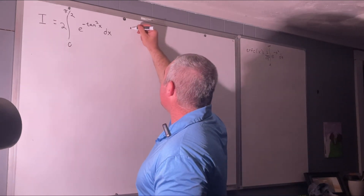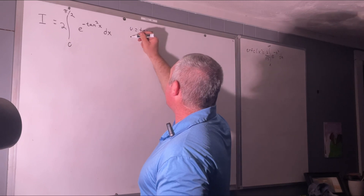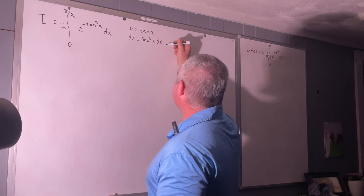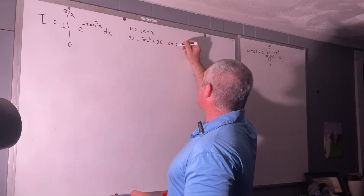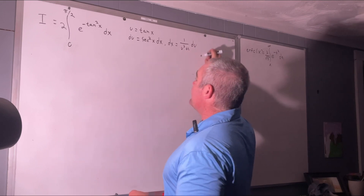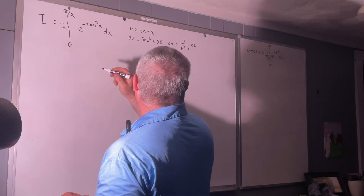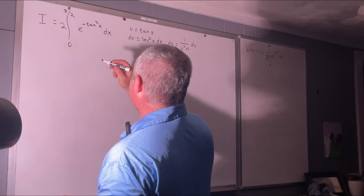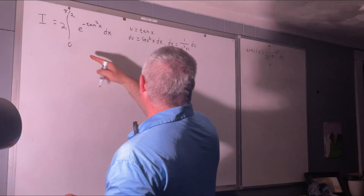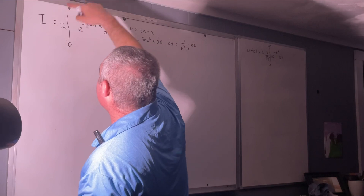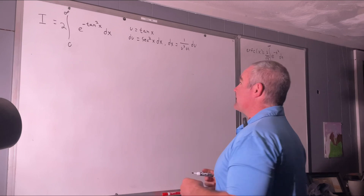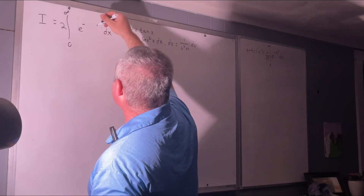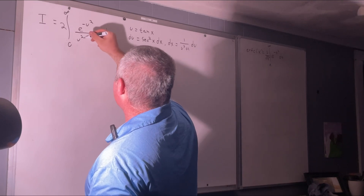Next, we're going to let u equal tangent X, therefore du is equal to secant squared X dx, or in other words, dx is equal to 1 over u squared plus 1 du. So our function i is going to be equal to 2 times the integral from 0 to infinity of e to the negative u squared over u squared plus 1 du.